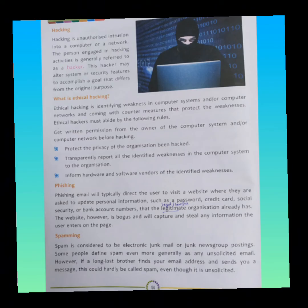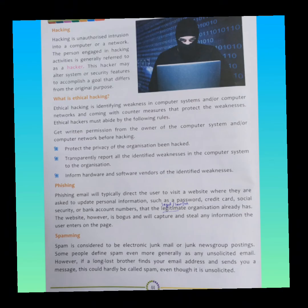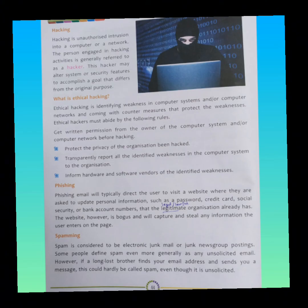Hacking can also be done ethically. When hacking is done to protect the weakness in a computer system with the written permission of the owner, that is called ethical hacking. Next is phishing — these are basically emails that direct you to a website that asks for your personal information like passwords or PIN numbers, and in this way they steal the information of the user. Next is spamming — spamming is basically the same mail that has been sent to thousands of people for some fraudulent purpose.